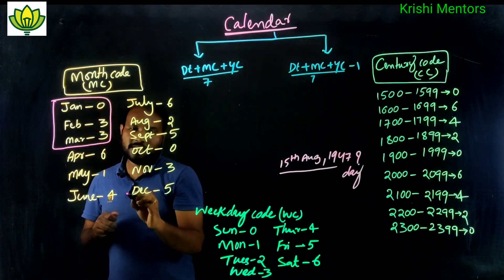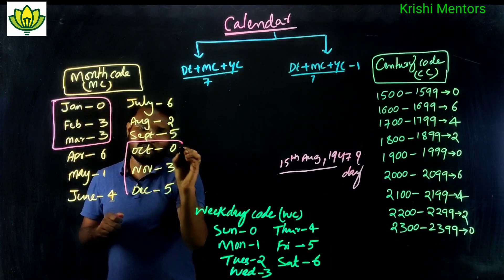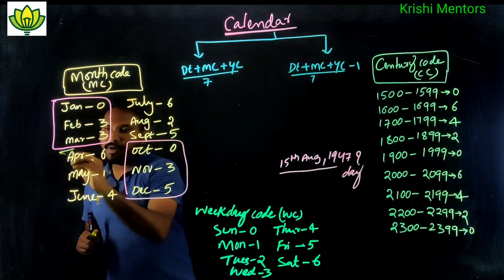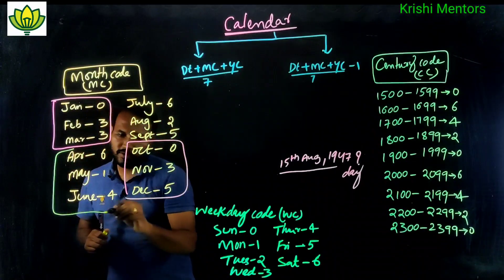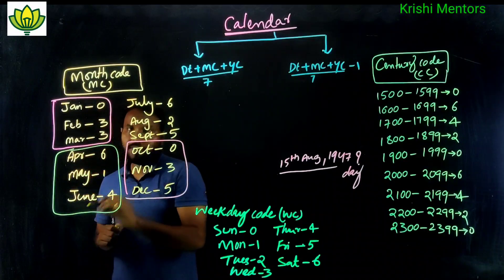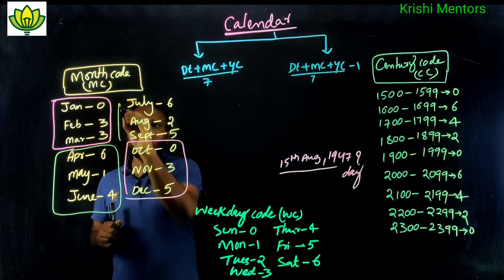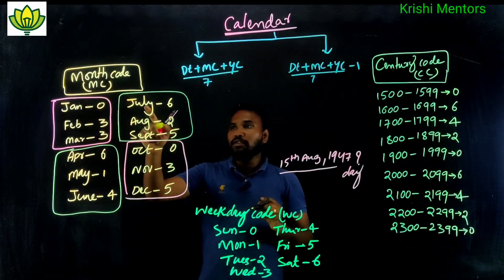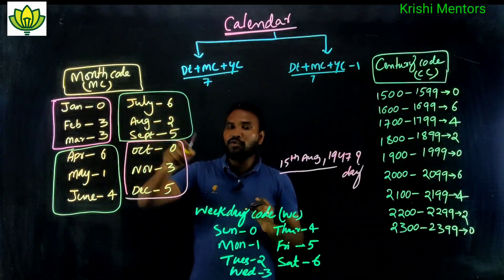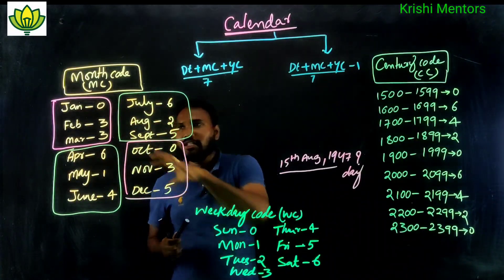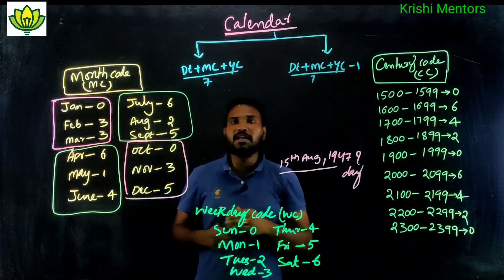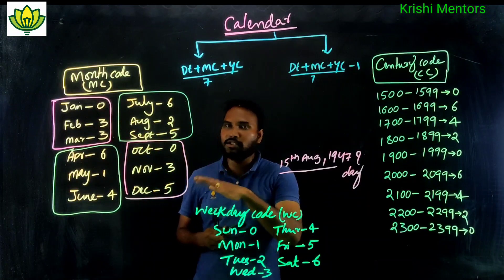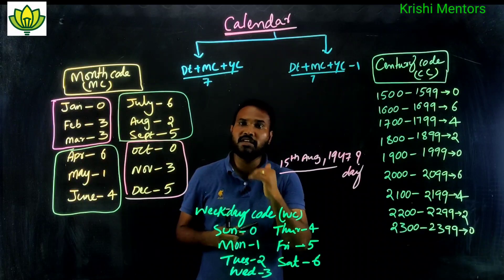The month code values are: 0, 3, 3 for the first group; then April = 6, June = 6, 14; and the sequence continues as 0, 3, 3, 6, 1, 4, 6, 2, 5, 0, 3, 5.